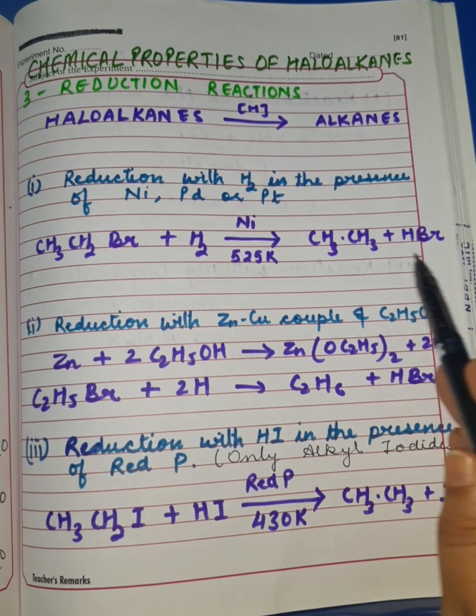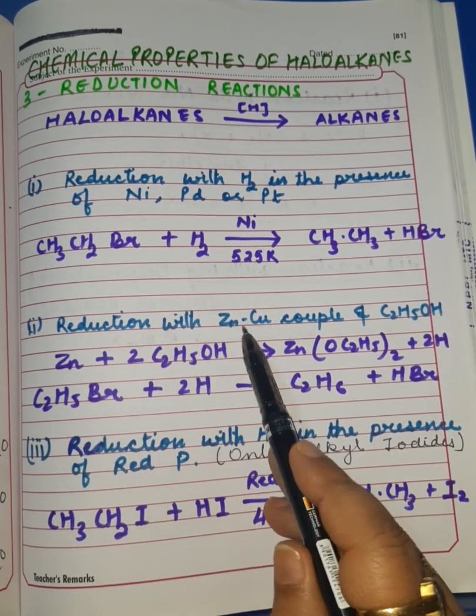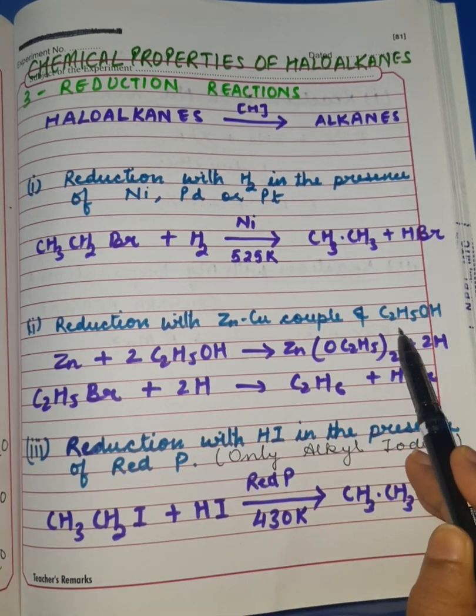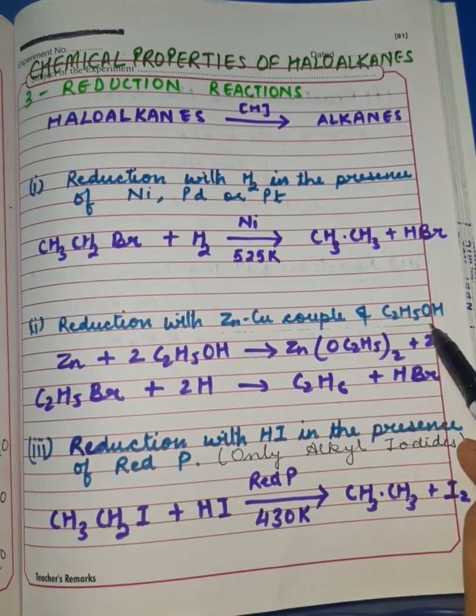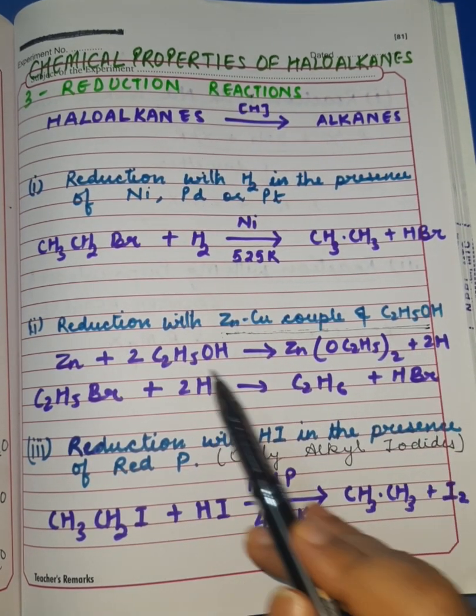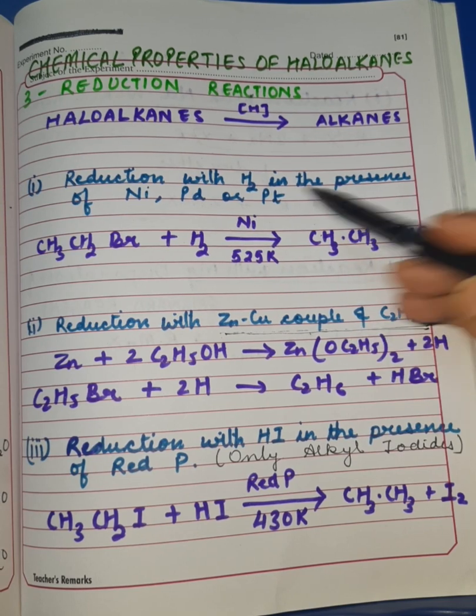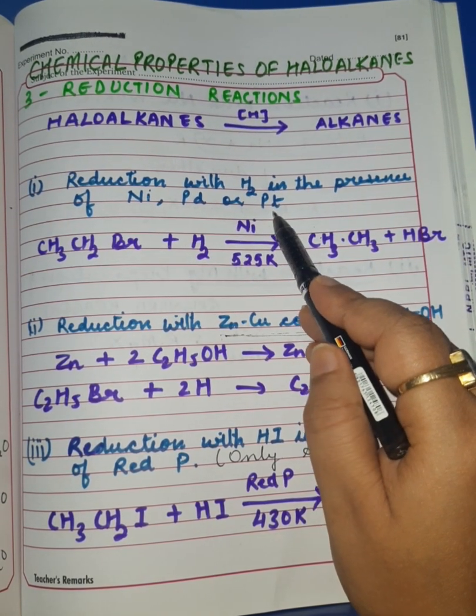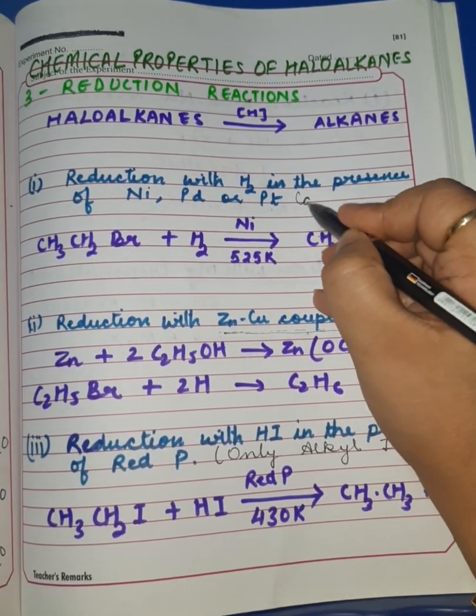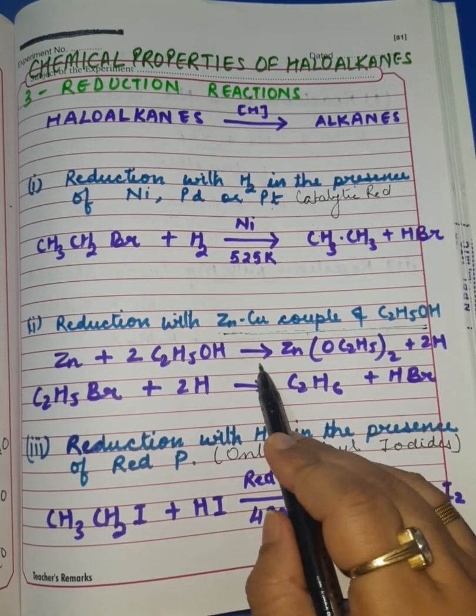Next is reduction with zinc-copper couple and ethyl alcohol. It's a reducing agent, and this reducing agent furnishes nascent hydrogen. There is a difference between these two reactions. This is catalytic reduction, and this is an example of reduction by reducing agent.